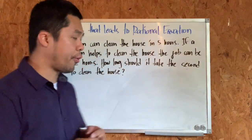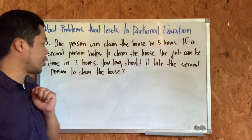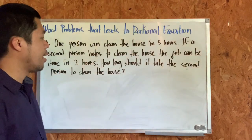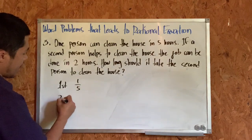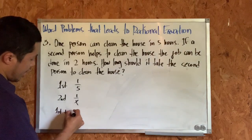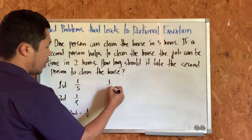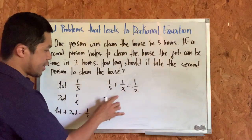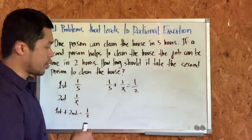Let's do another example. One person can clean the house in five hours. If a second person helps, the job can be done in just two hours. How long would it take the second person to clean the house alone? The first person's rate is 1/5. The second person's rate is unknown, so that's 1/x. Together, their rate is 1/2. The equation is: 1/5 plus 1/x equals 1/2.